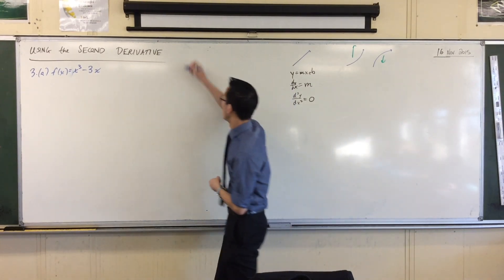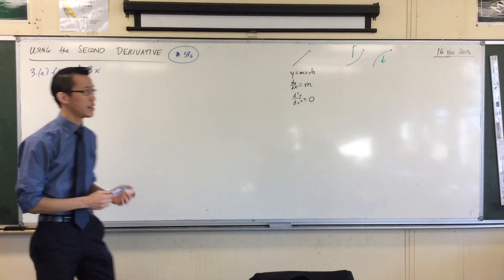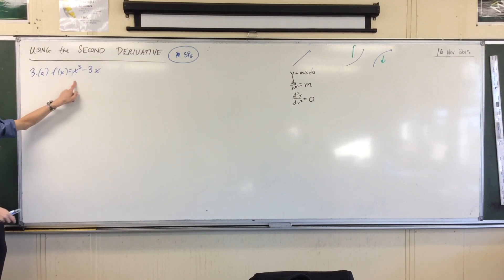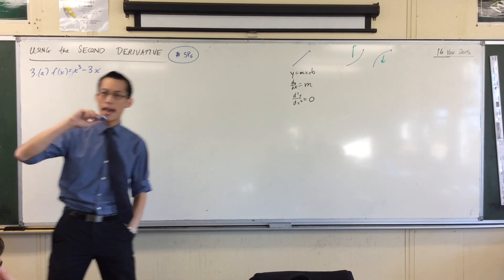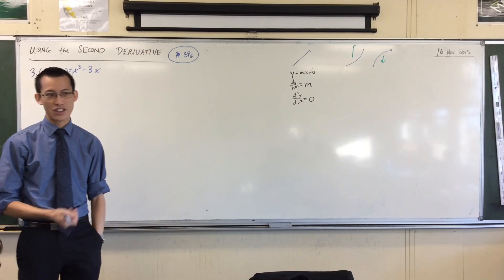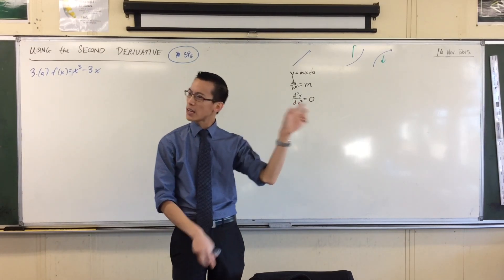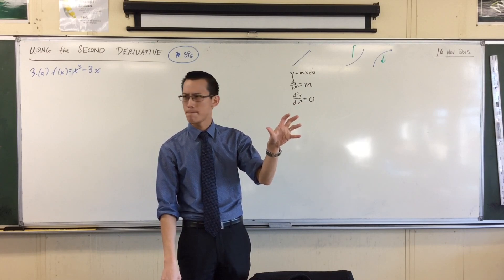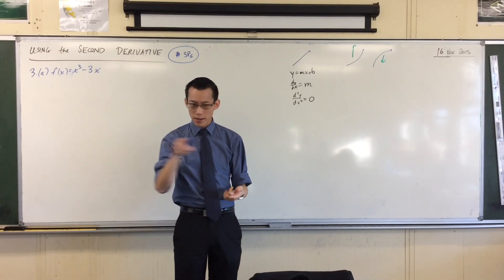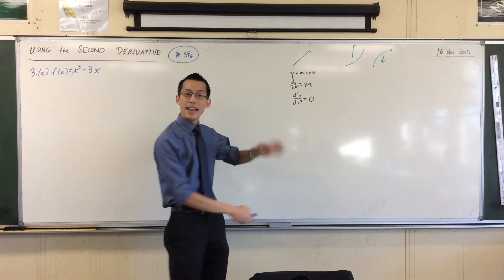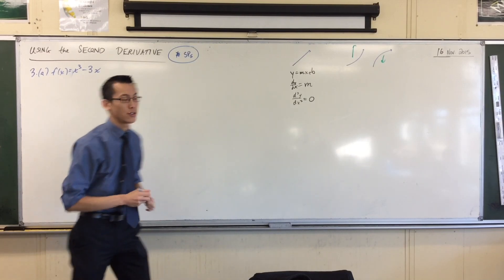We're going to focus on two main areas, and the first is stationary points — something you already know about. Looking at this question, it maps things out clearly: find f', find f'', then find any stationary points, and by examining the sign of the second derivative, determine their nature. Previously we used a table of values, looking left and right of the point to see what shape we're getting. Now, with the second derivative, we have a more powerful and efficient tool.